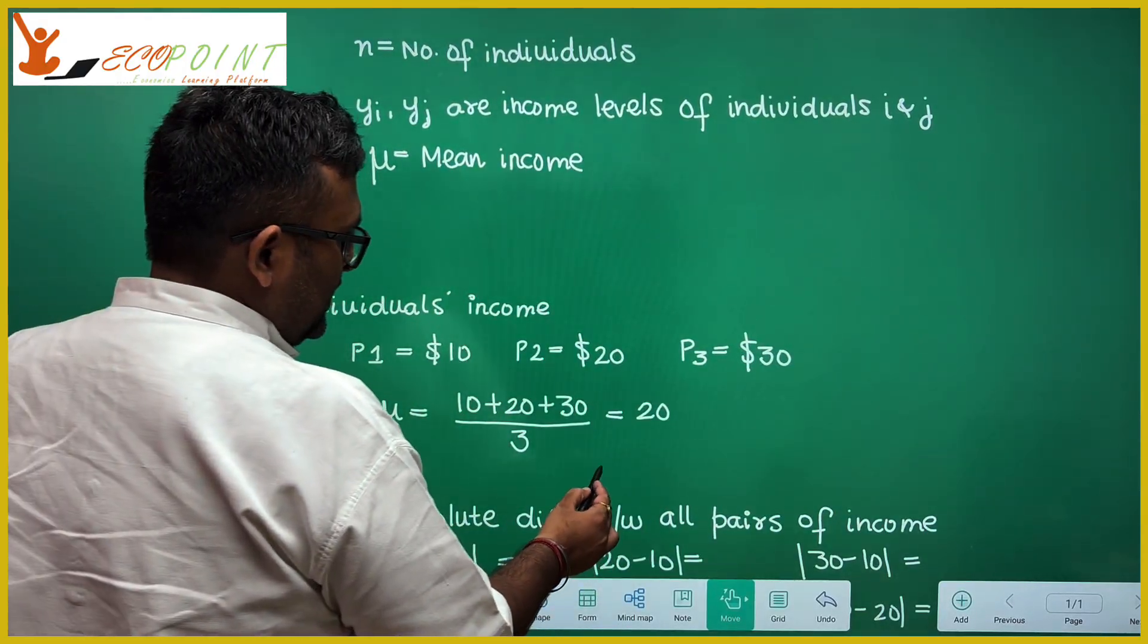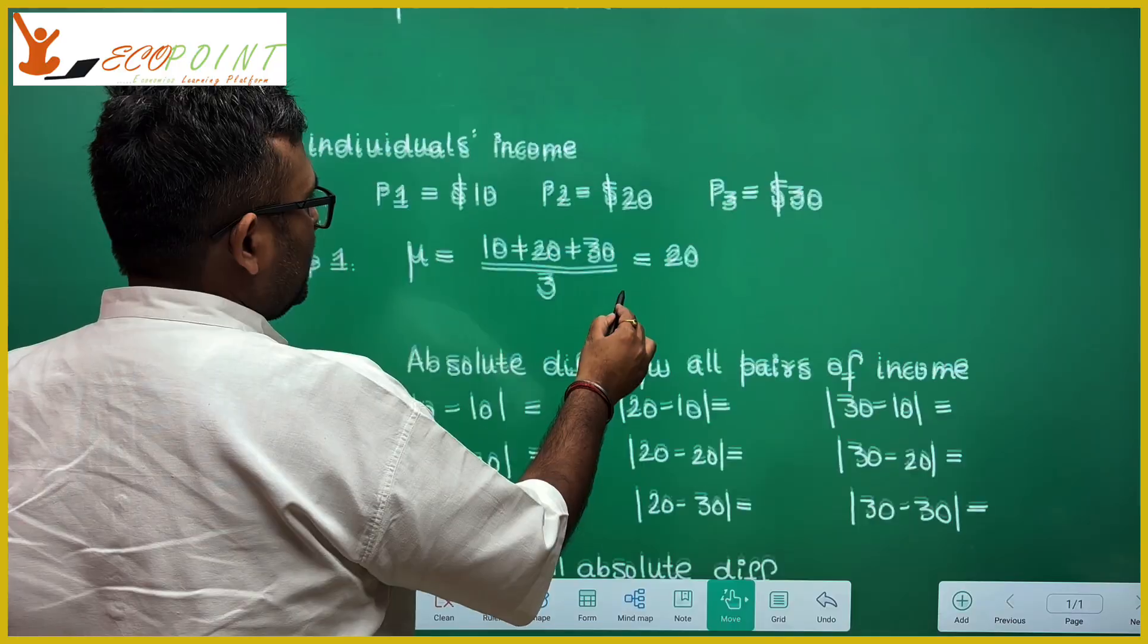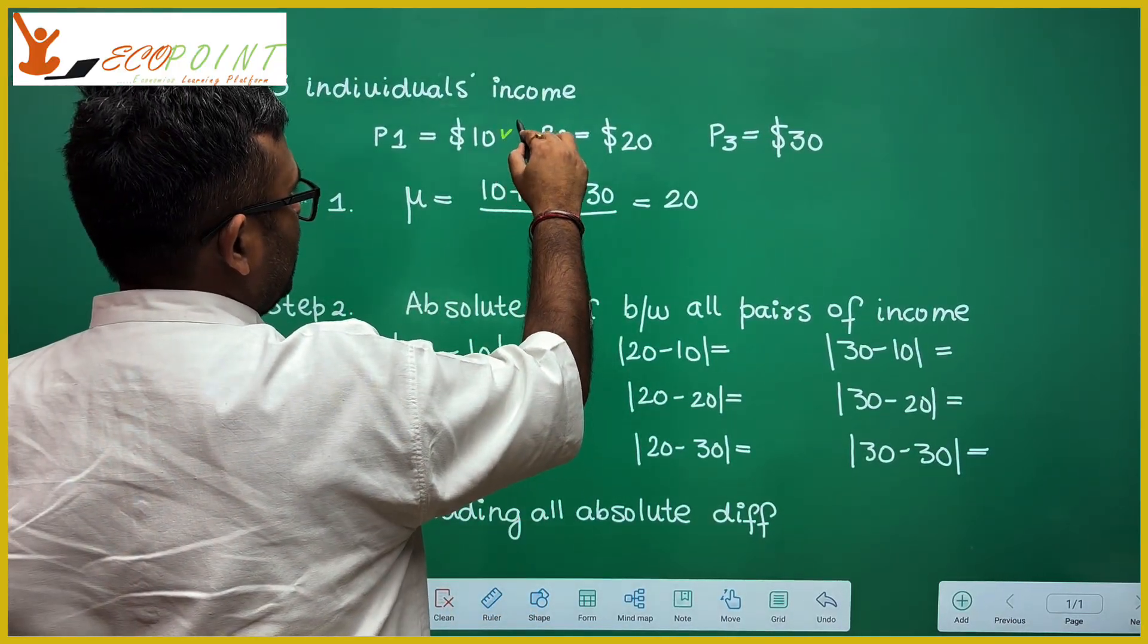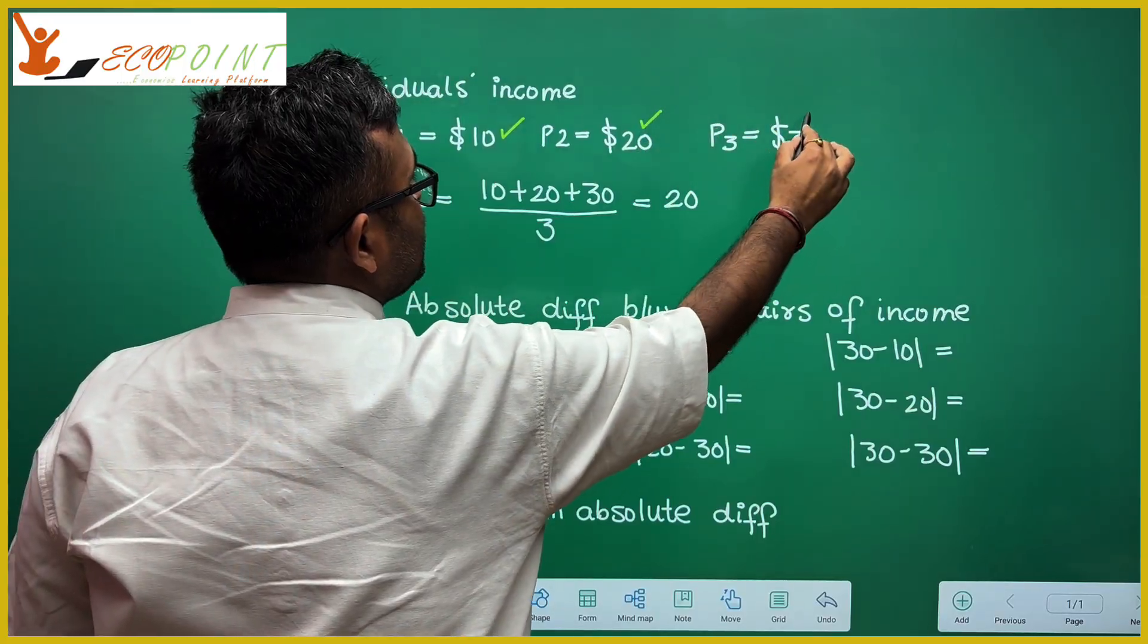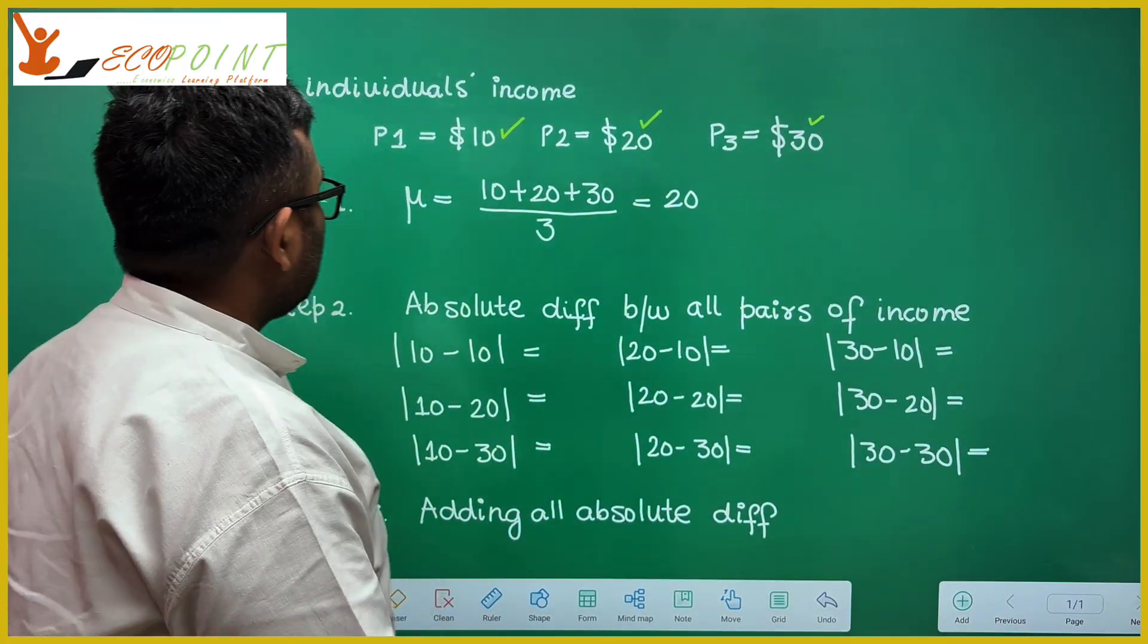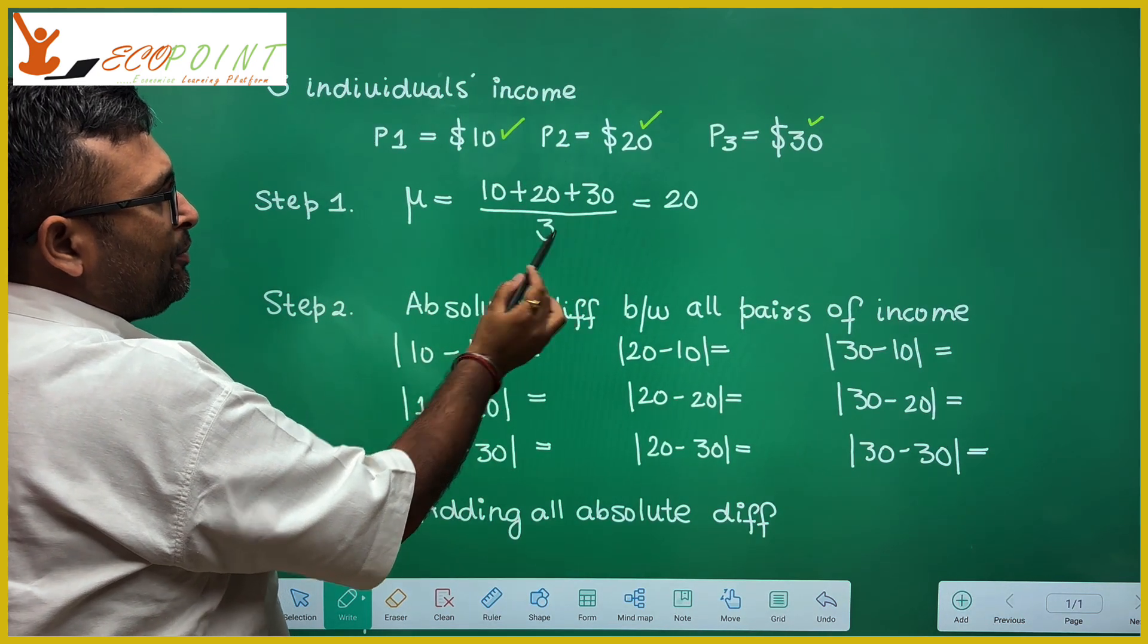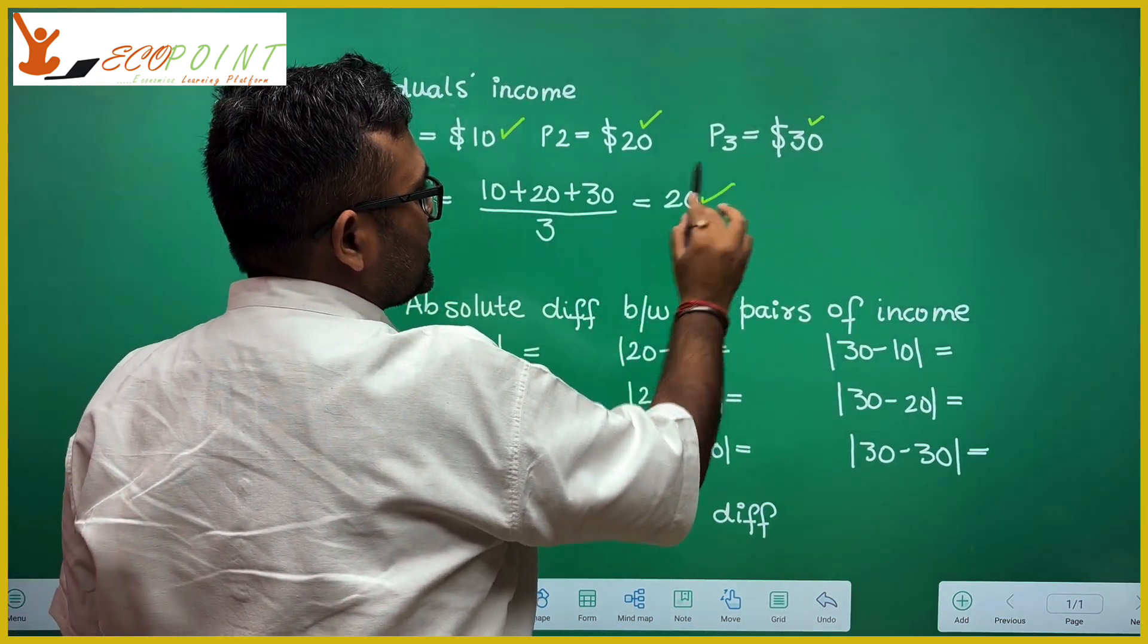So there are three individuals and they are earning what? Person 1 is earning $10. Person 2 is earning $20. And person 3 is earning $30. So average income is 10 plus 20 plus 30 upon 3, that is 20. We have found this out.